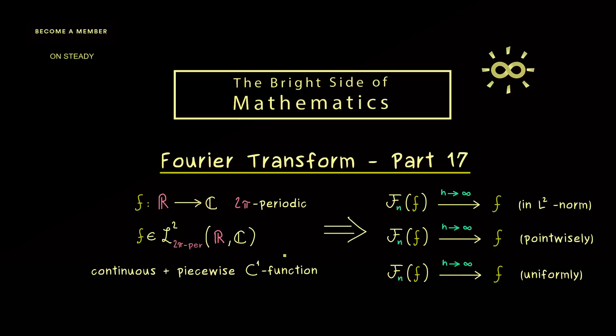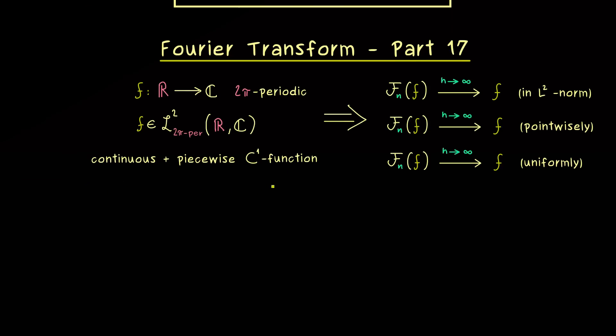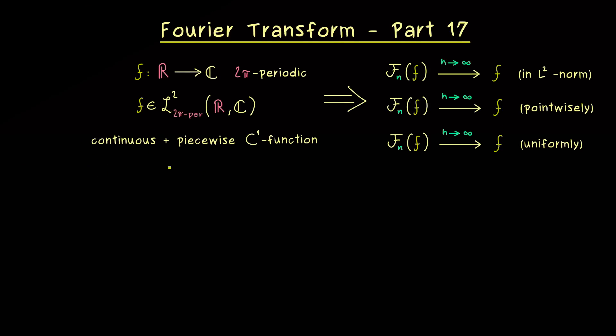In fact, in today's video we will see that both things—the continuity and the C¹ property—can be substituted by a weaker form. This means we will also be able to say something about functions with a jump. For example, it would be really nice to know what the Fourier series does for this function here. Of course, for fixed natural number n, our approximation ℱₙf will always be a continuous function, so there will be no jump for ℱₙf. But in the limit it could have the jump, and in this case we also want to know what is the value at the jump point. This means we have to look at the value ℱₙf at 0 and then send n to infinity. So the question is: does this limit exist and what is the value of it?